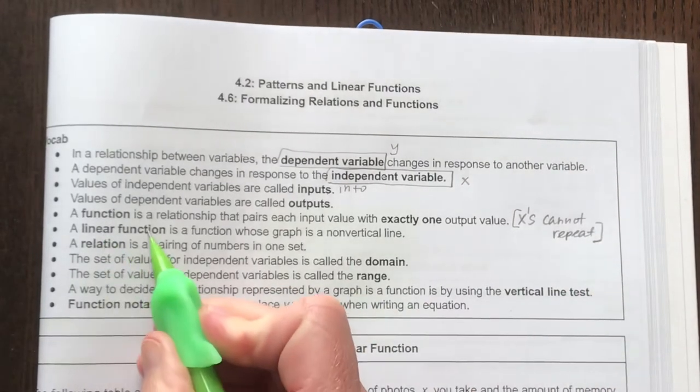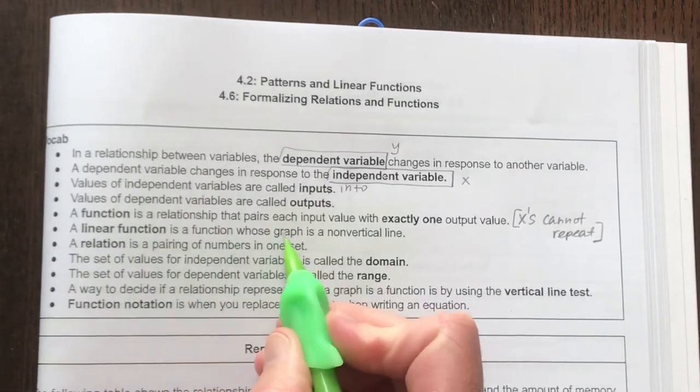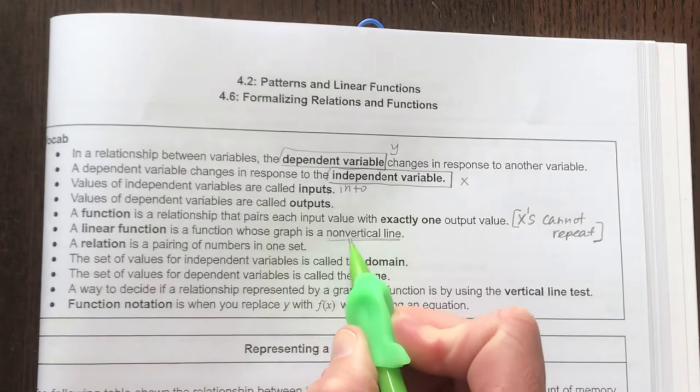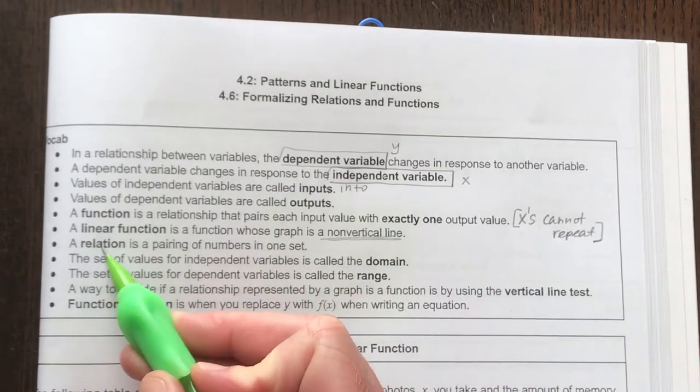Now, the next thing says a linear function, so linear meaning line. A linear function is a function whose graph is a non-vertical line. We'll talk about that during our notes.